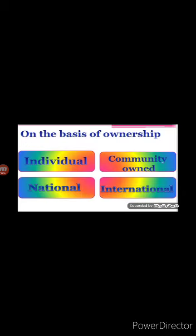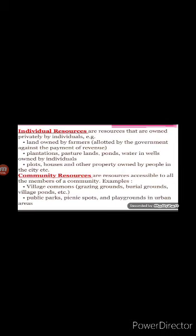On the basis of ownership, resources can be divided into individual, community-owned, national, and international. Individual resources are owned privately by individuals — for example, land owned by farmers allotted by the government against payment of revenue, plantations, pastoral lands, ponds, water wells owned by individuals, plots, houses, and other property owned by people in cities, etc.